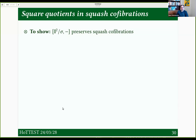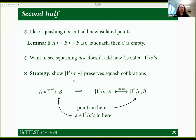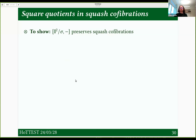Is that the internal hom in cubical sets — the square brackets? Yes, that's the internal hom. This is specific to the Cartesian situation; in affine cubical sets I would want the monoidal hom. What I want to show is that this preserves squash cofibrations, and I can use a more concrete description of squashing that I have in cubical sets.